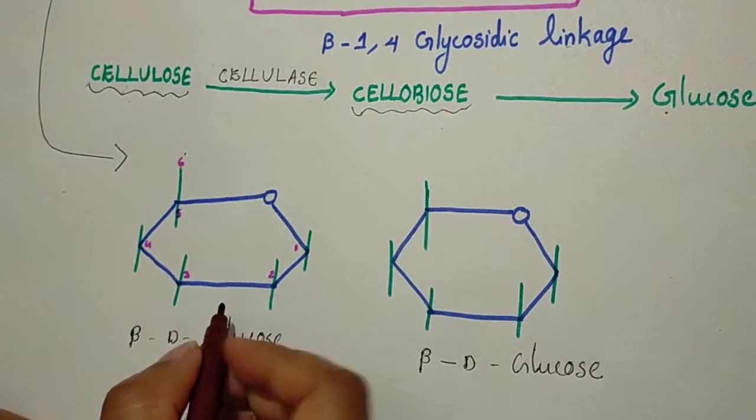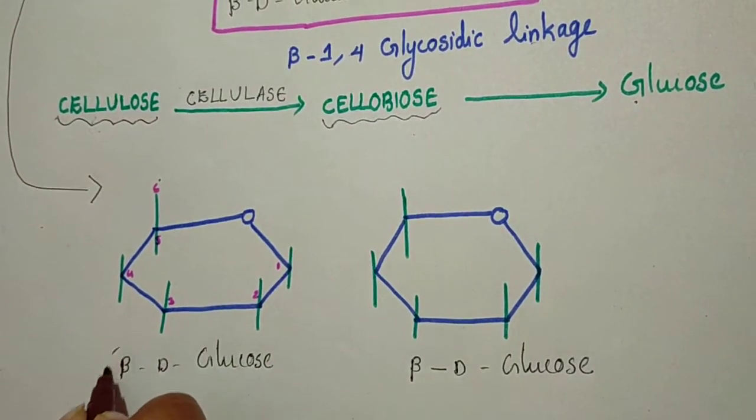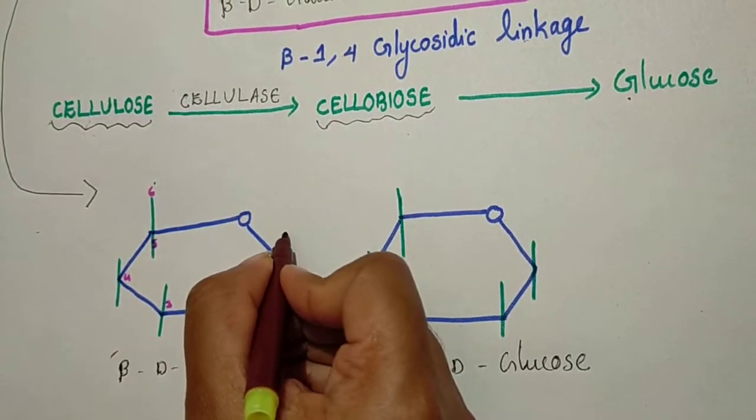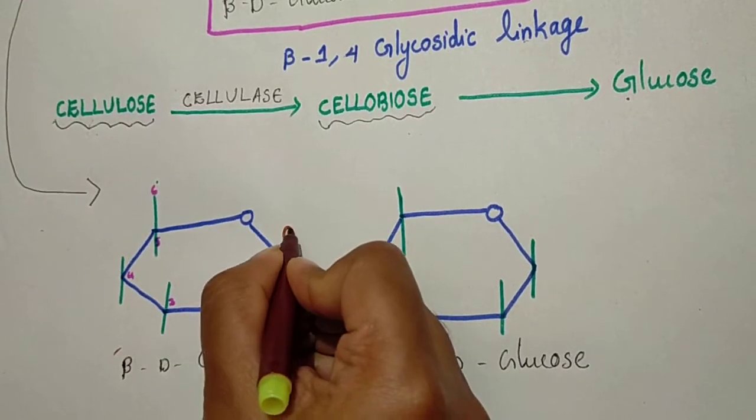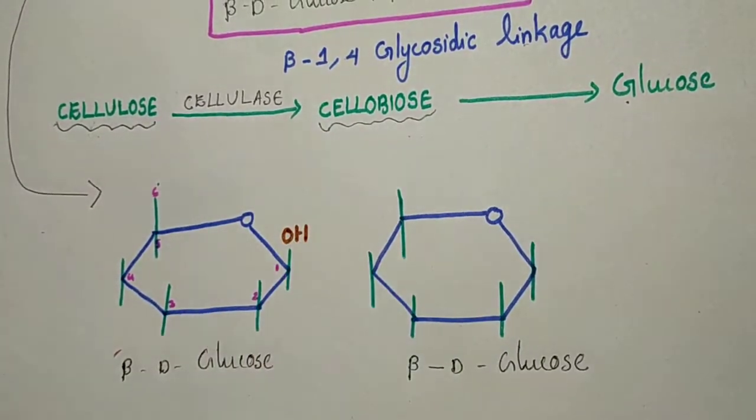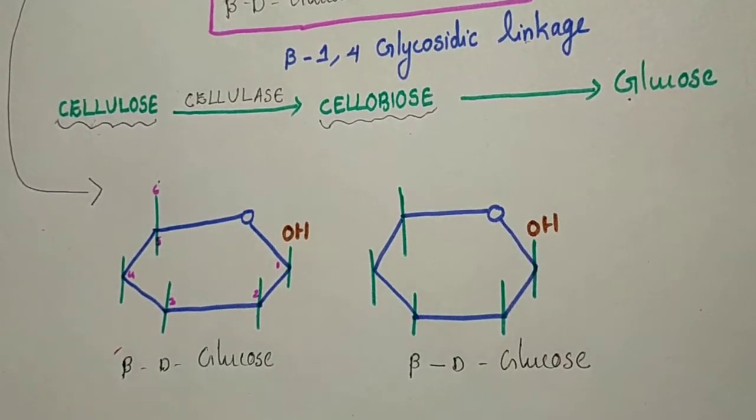Since it is a beta-D-glucose, we know that the OH group will be present in the top. In beta-D-glucose, OH will be present in the top.